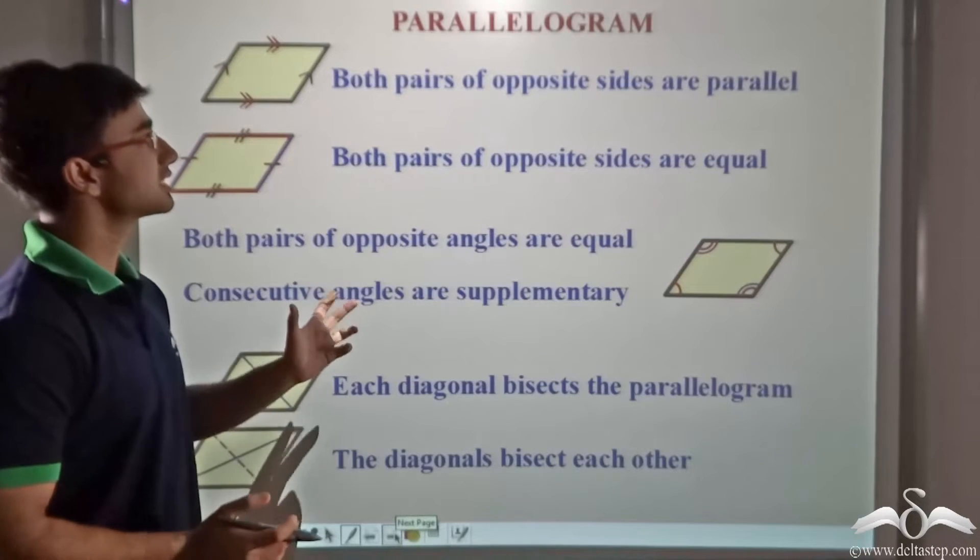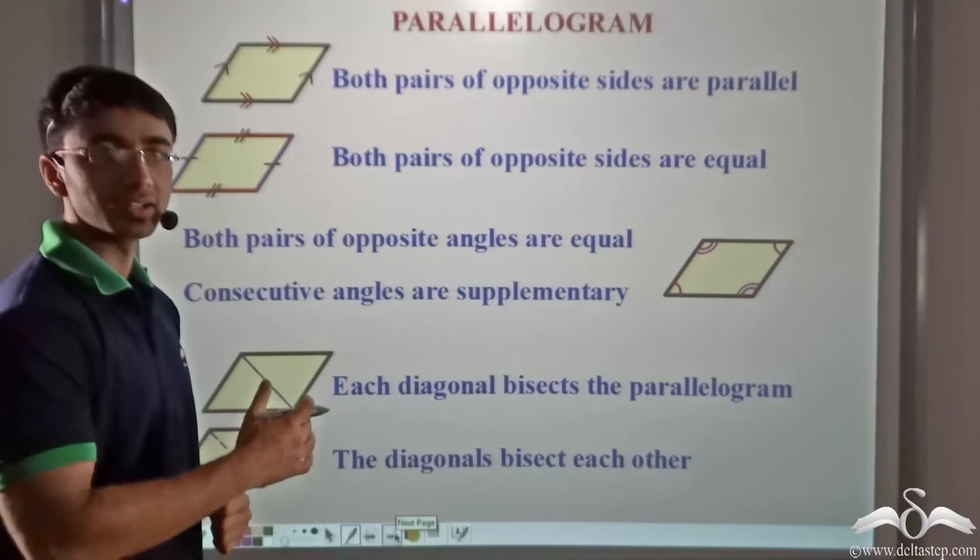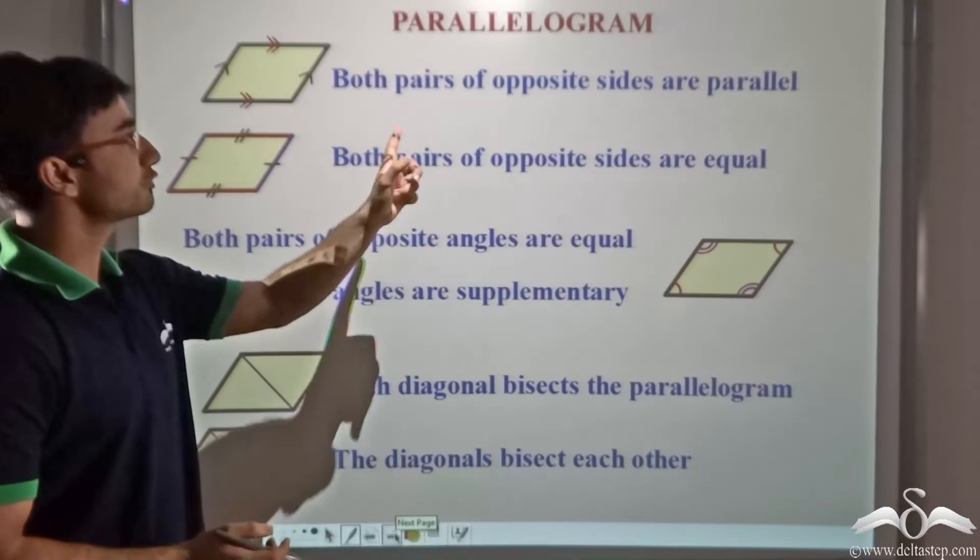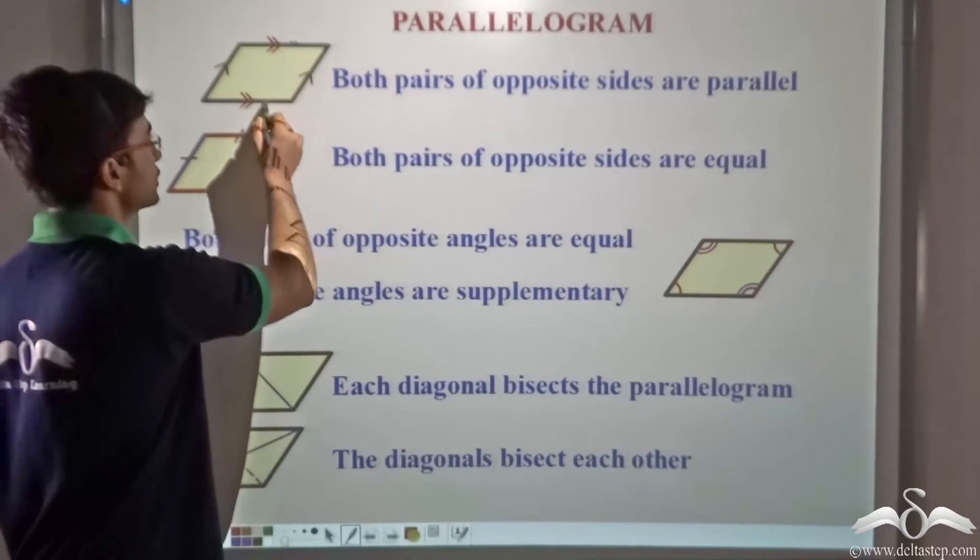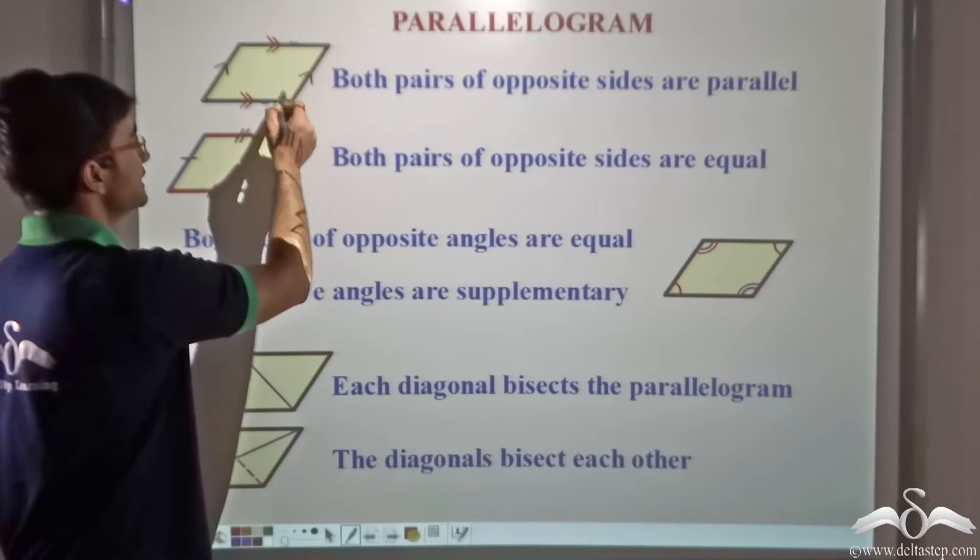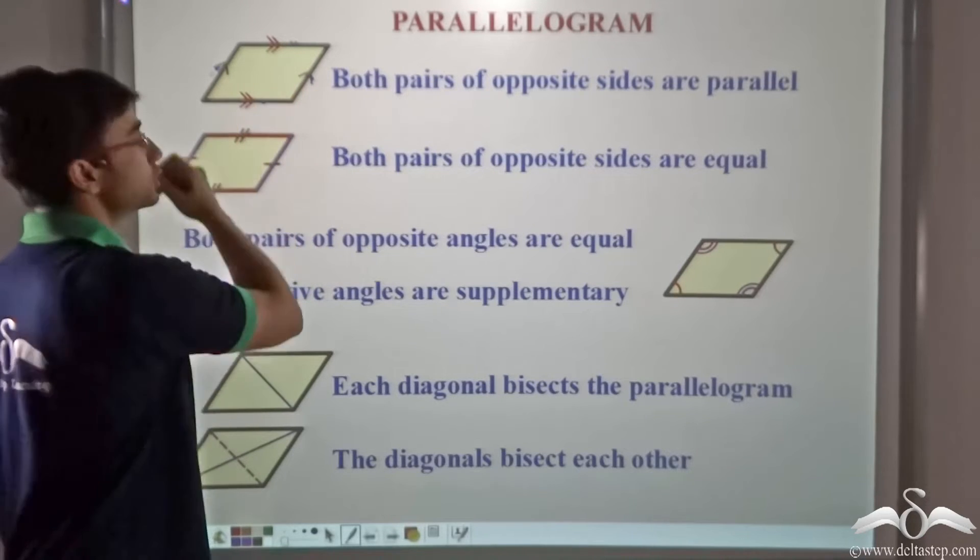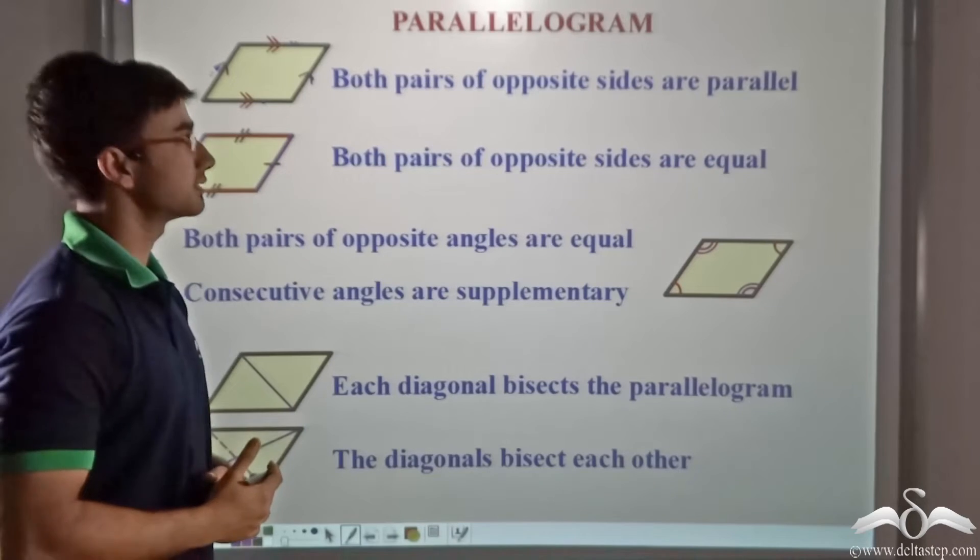So summing up, these are a few of the properties of a parallelogram. Both pairs of opposite sides are parallel. That is, this side is parallel to this side being opposite sides, and this side is parallel to this side. Again, opposite sides.